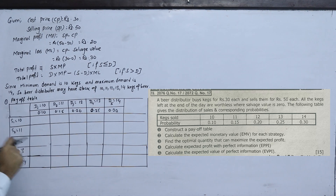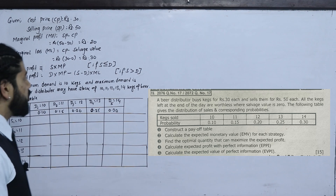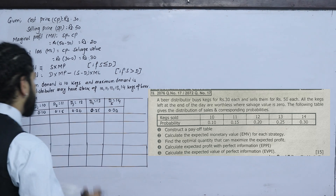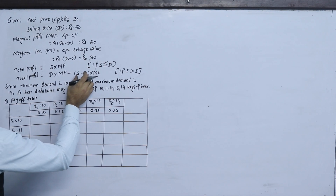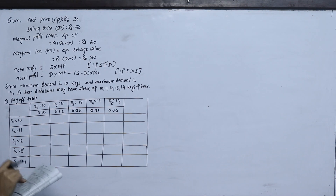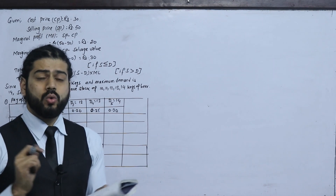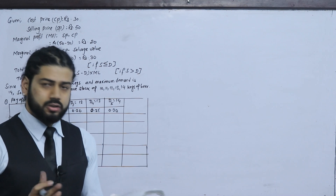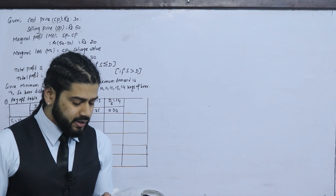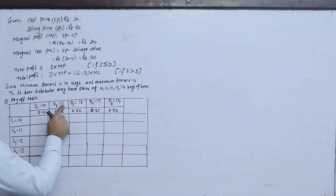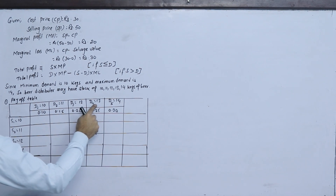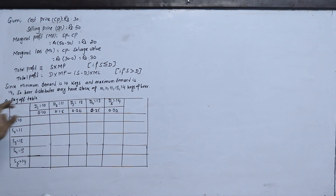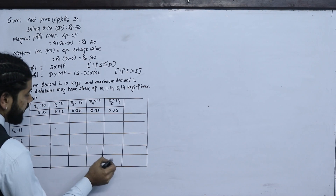To compute the pay-off, we consider whether stock equals demand or demand is greater than stock. The total profit is: stock multiplied by marginal profit minus marginal loss. The minimum demand is 10 and maximum demand is 14. The stock options range from 10 to 14 as well.